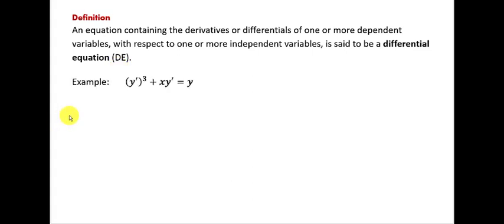Here's an example. This is an equation — I can see an equal sign with something on the right-hand side and something on the left-hand side. This equation involves derivatives: y prime represents the first derivative here and here. Now what is that 3? Notice that it's not inside parentheses, so that 3 is simply a power. In other words, this first derivative of y is raised to the third power. Since we're looking at an equation, the logical question is: what is the solution of an equation like that?